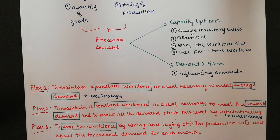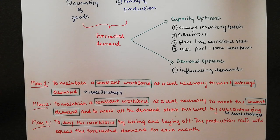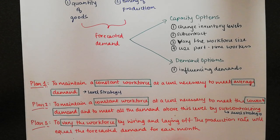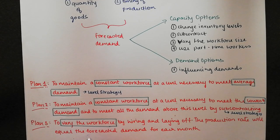Plan three is different because we are not focusing on maintaining the workforce. We are varying the workforce by hiring and laying off workers, so the production rate will equal the forecasted demand for each month. Since we are not having a constant workforce — not maintaining or stabilizing the workers, just hiring and laying off people to meet the demand — the production rate will equal the demand. Varying the workforce means it's going to be a chase strategy.